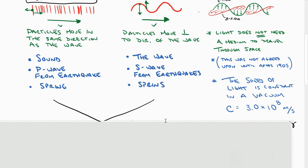When we talk about light, light does not need a medium to travel through space. This was not agreed upon until after 1905. And the speed of light in a vacuum is constant. This is the letter C. That velocity is equal to 3 times 10 to the 8th meters per second. You have seen C in that formula. That's right. E equals MC squared. Good.